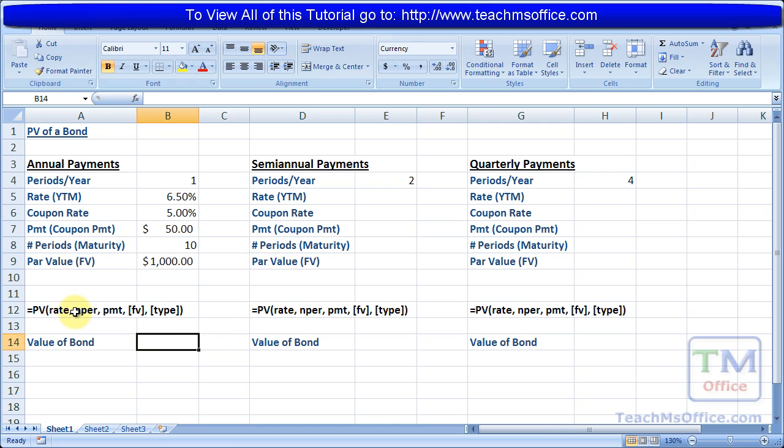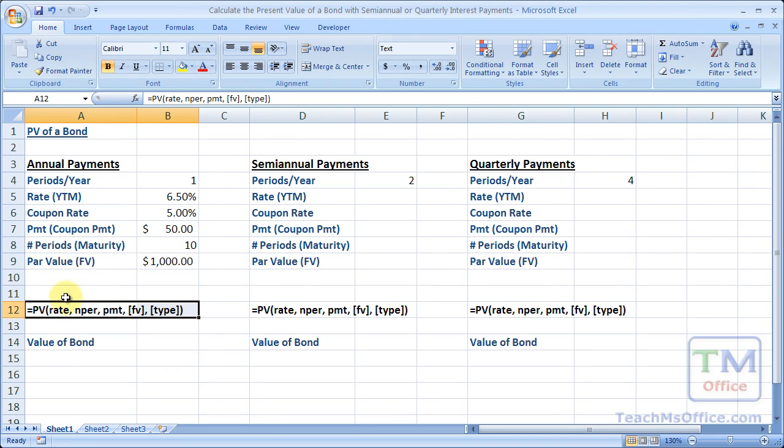So we're using the present value function because that's the quickest way to get the current price of a bond. And I've got it listed out here underneath each bond so we can check out all the arguments as we go. There are only three required arguments and two optional.